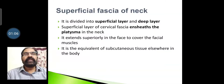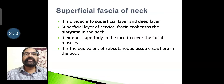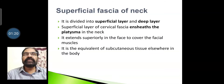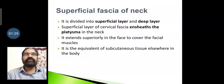In the neck, we have a superficial fascia and a deep fascia, divided into superficial and deep layers. The superficial layer of cervical fascia encloses the platysma in the neck. It extends superiorly into the face to cover the facial muscles, and it is equivalent to the subcutaneous tissue elsewhere in the body.